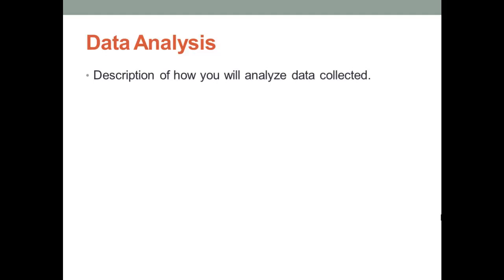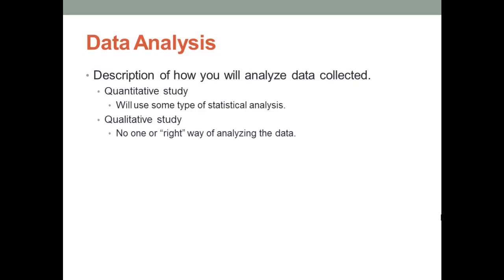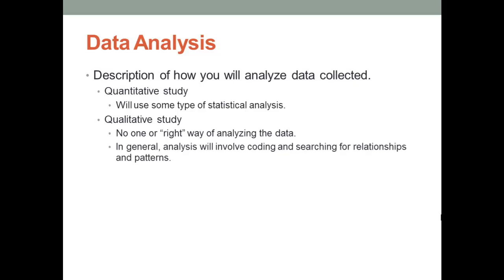Finally, the data analysis section of your methods section describes exactly how you propose to analyze the data you plan on collecting. In a quantitative study, you will use some type of statistical analysis — you will need to specify those analyses and justify why they were chosen. In a qualitative study, there is no one right way of analyzing the data; you must explain the approach you propose to use and justify its use. Generally, qualitative analysis will involve coding and searching for relationships and patterns in qualitative data. Mixed research uses multiple data analysis methods, both quantitative and qualitative. Table 19.8 in Chapter 19 will show some general types of mixed analysis.